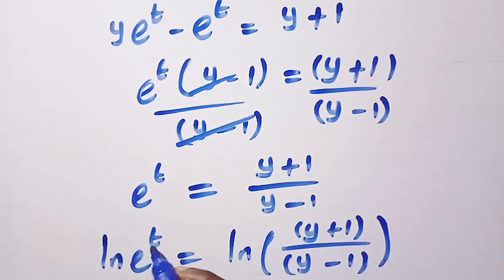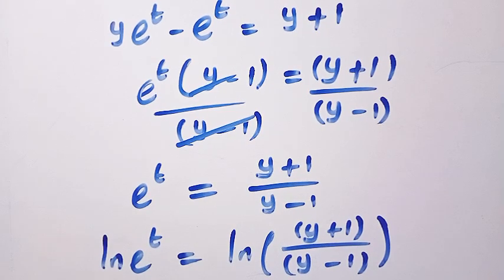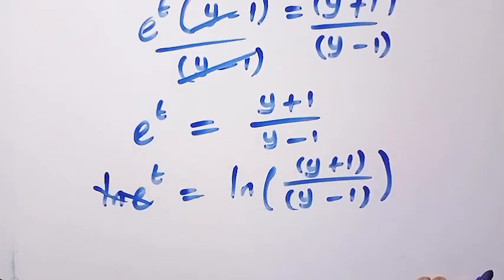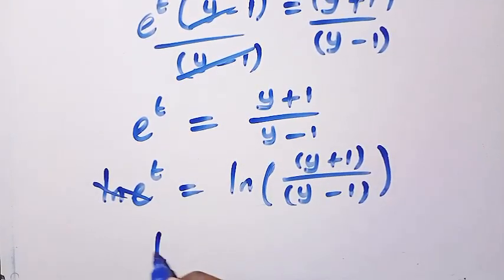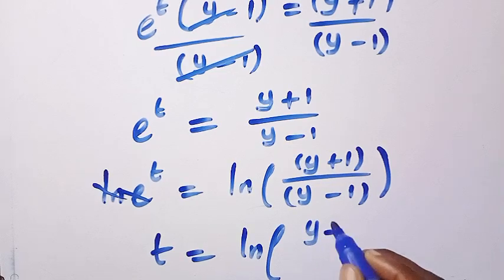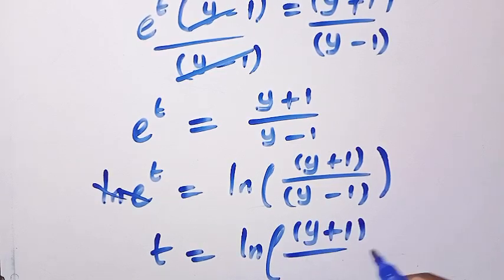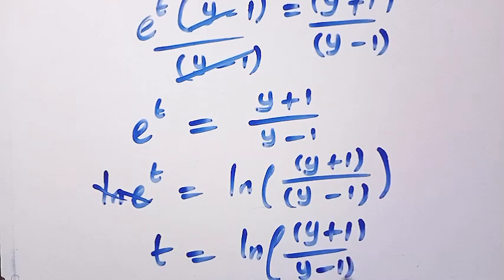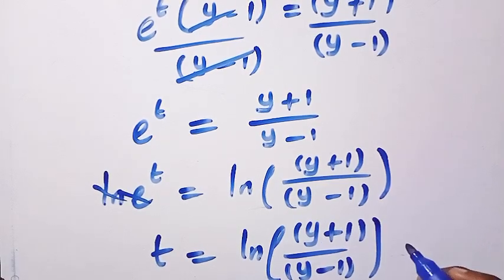For e and ln, they cancel each other. So when ln comes to exponents, we have t = ln[(y + 1)/(y - 1)]. So this is what we have for t.